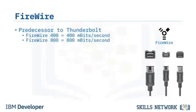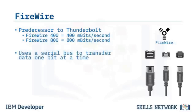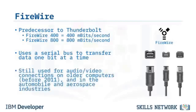Before Thunderbolt, Firewire was a popular interface on Macintosh computers. It comes in various shapes: the 400 is a slimmer connection with one rounded side, and the faster 800 connector is thicker. Firewire uses serial bus architecture to transfer data one bit at a time, making it lighter and cheaper than parallel buses. Firewire has been replaced by Thunderbolt and USB on modern computers, but users with older hardware and the automobile and aerospace industries still use these ports.